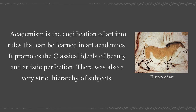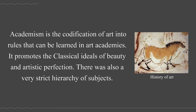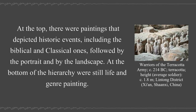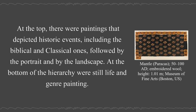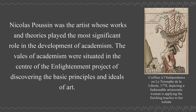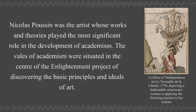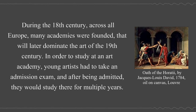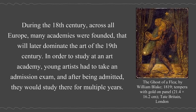Academism is the codification of art into rules that can be learned in art academies. It promotes the classical ideals of beauty and artistic perfection. There was also a very strict hierarchy of subjects: at the top, paintings that depicted historic events including biblical and classical ones, followed by the portrait and by the landscape; at the bottom of the hierarchy were still life and genre painting. Nicolas Poussin was the artist whose works and theories played the most significant role in the development of Academism. During the 18th century across all Europe, many academies were founded that would later dominate the art of the 19th century.